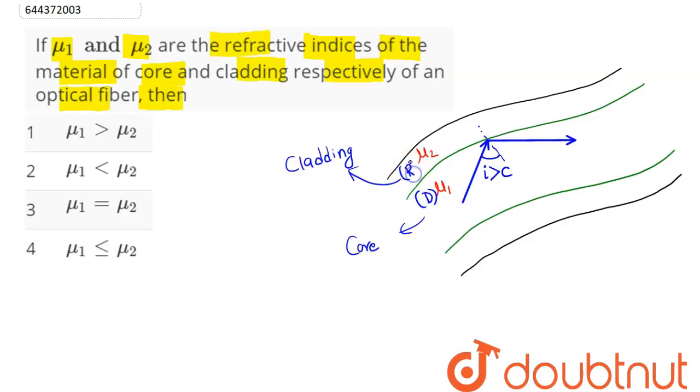For total internal reflection, the condition is light must travel from denser to rarer medium. The core must be the denser medium and the cladding must be the rarer medium.